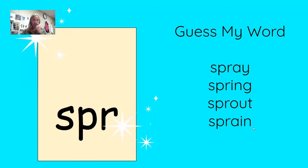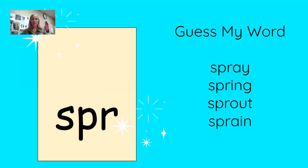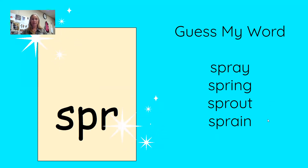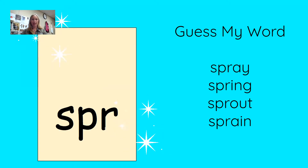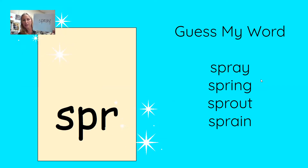Clue number three: my word rhymes with the word 'may.' Spray — may. Spring — may. Sprout — may. Sprain — may. My word rhymes with may. Here's clue number four: if you're outside in the hot summer and I have the garden hose, I might do this with the water. Did you figure out that my word is 'spray'? Awesome if you did!